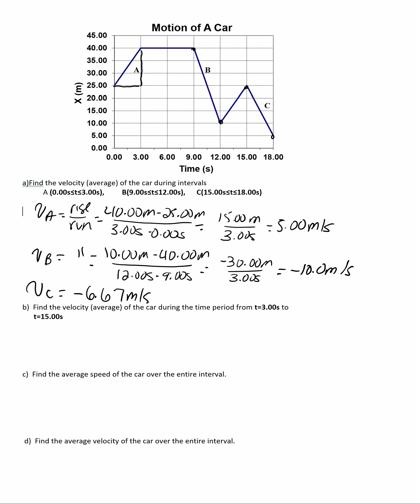If we want to find the velocity between 3 and 15, all we will do is this. At 3, you're at position 40, and at 15, you're at position 25.